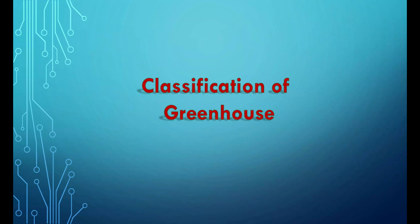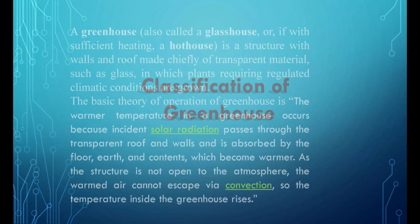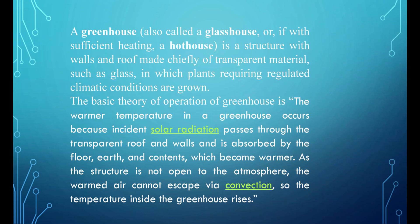A greenhouse, also called a glasshouse, or, if with sufficient heating, a hothouse, is a structure with walls and roof made chiefly of transparent material, such as glass, in which plants requiring regulated climatic conditions are grown.